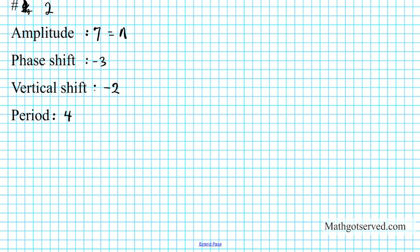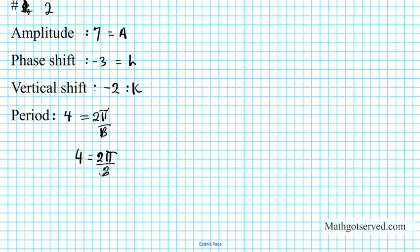The amplitude is a, phase shift is h, vertical shift is k, and the period equals 2π over b. Let's solve this for b and then plug it in directly. We know 4 equals 2π over b. One quick shortcut is if you just switch b and 4 — that's always what b is going to be. Let me show you the full procedure to confirm that switching is equally accurate.